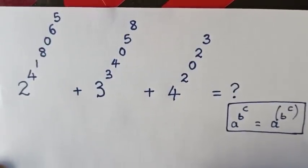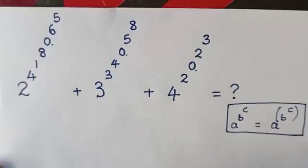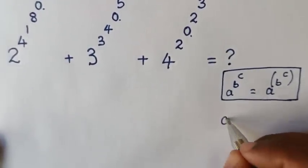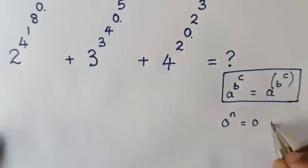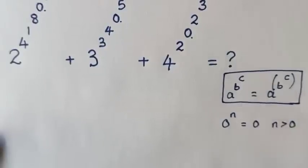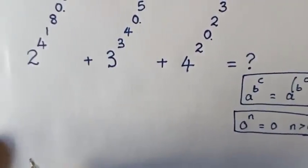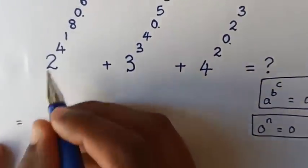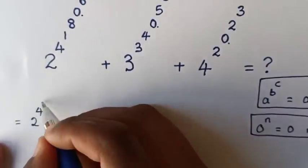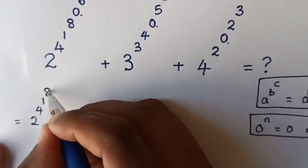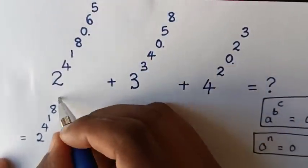In this nested exponent, here we have power of 0, here power of 0, and also here power of 0. We will apply this rule: 0 power of n is equal to 0, such that n should be greater than 0. Then this will be equal to 2 power of 4 power of 1 power of 8, and then 0 power of 6 power of 5 is 0.